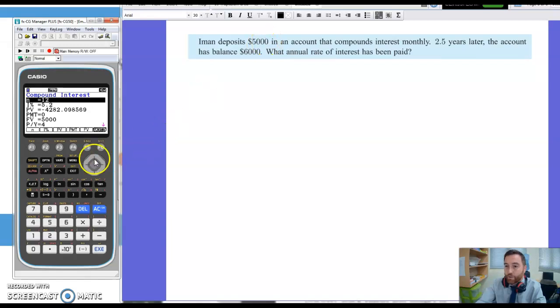So deposits $5,000, so that is my PV minus $5,000. And we want the future value as $6,000 positive. We want to know the interest rate if it's 2.5 years compounded monthly. So my payments per year is 12. And I want to know the interest. That's the bit I'm going to calculate.